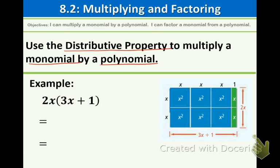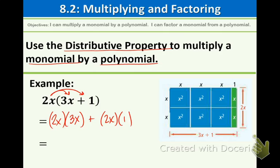We're distributing, so take the 2x and draw some arrows. We are going to be multiplying, so we're going to have 2x times 3x plus 2x times 1. Remember, we're just sharing that number in front. Let's use our skills from chapter 7: we get 6x squared because we add the exponents — the 1s — to get 2. And 2x times 1 is just 2x, because when we multiply by 1 nothing happens.